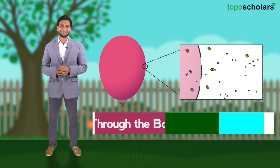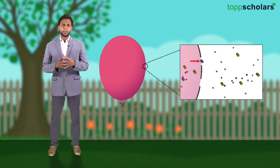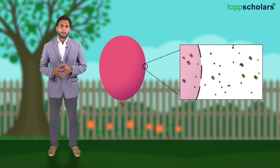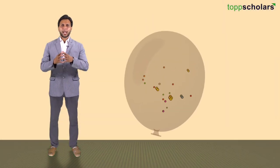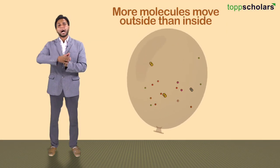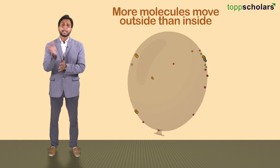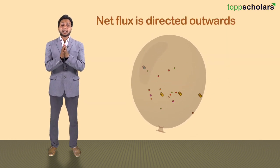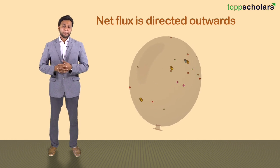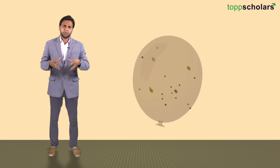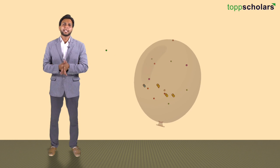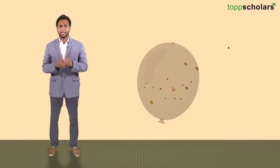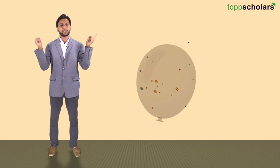In doing so, some of them return while some of them diffuse to the balloon's boundary. Mind you, it happens both from inside to outside and vice versa. A balloon deflates because there are more molecules moving outside rather than inside — in other words, a net flux is directed outwards, because the pressure inside the balloon is higher.